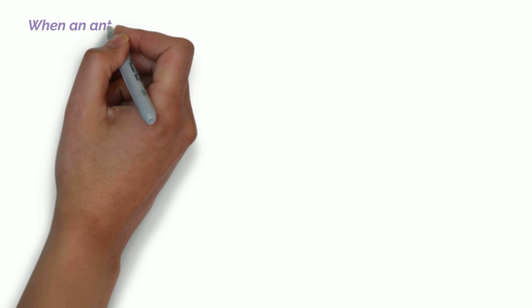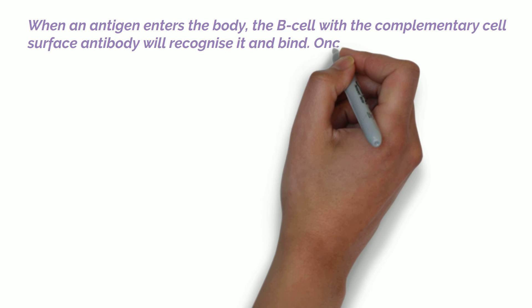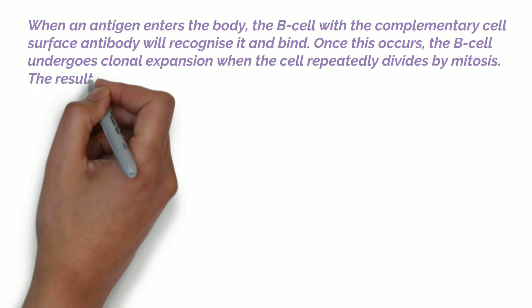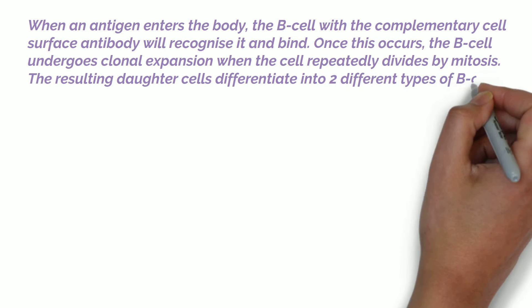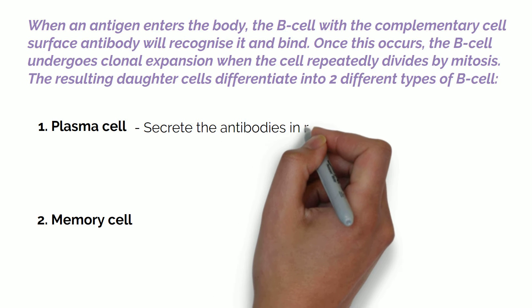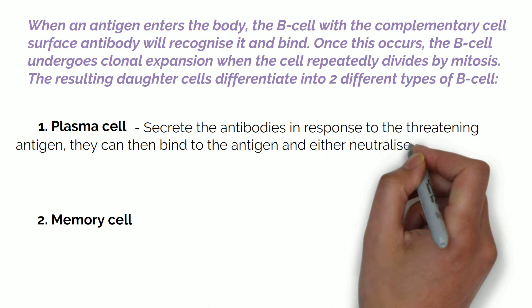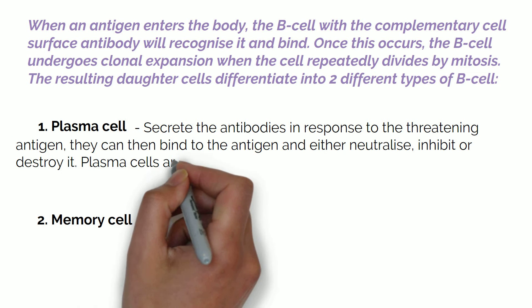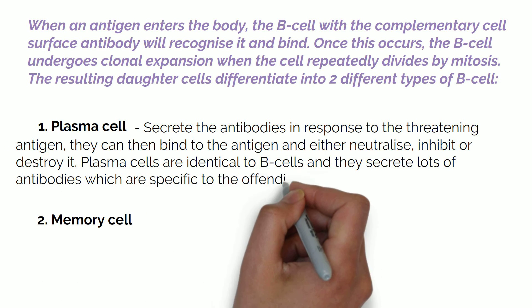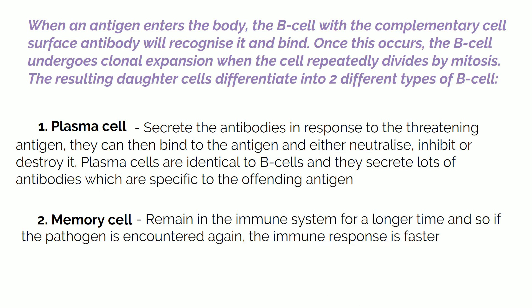When an antigen enters the body, the B cell with the complementary cell surface antibody will recognize it and bind. Once this occurs, the B cell undergoes clonal expansion when the cell repeatedly divides by mitosis. The resulting daughter cells differentiate into two different types of B cell: a plasma cell or a memory cell. Plasma cells secrete antibodies in response to the threatening antigen, which can then bind to the antigen and either neutralize, inhibit or destroy it. Memory cells remain in the immune system for a longer time, so if the pathogen is encountered again the immune response is faster.